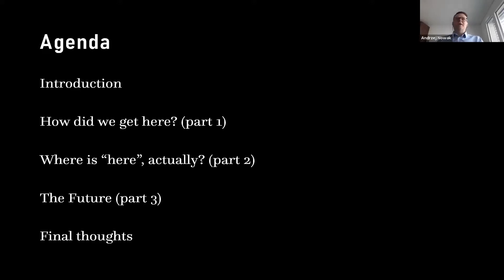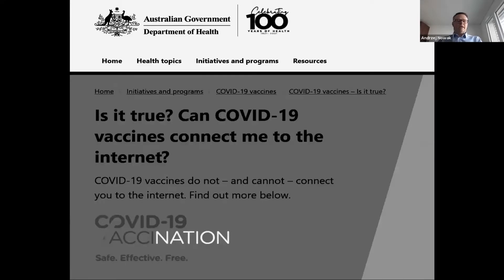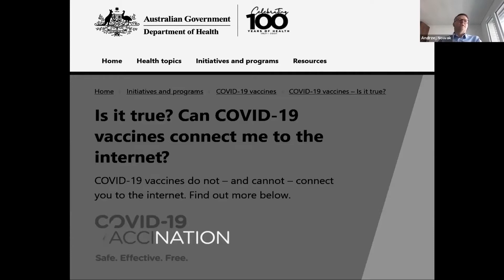Just to illustrate the level of the discussion we're having today, I'd like to show you a little icebreaker. This is a real screenshot from a real website that appeared at the beginning of the COVID-19 pandemic. The Australian government posted a frequently asked question: 'Can COVID-19 vaccines connect me to the internet?' The answer is no, they cannot. For everybody in science and technology who have been following these events, it becomes clear that communicating scientific and technological advances to the general population has to be done with a lot of care and attention. We can also transpose some of that uncertainty onto questions that surround privacy.